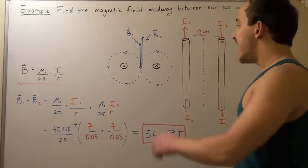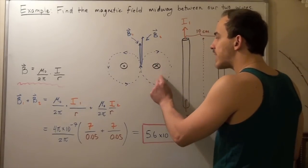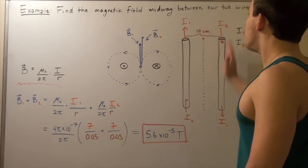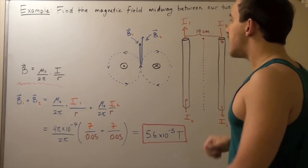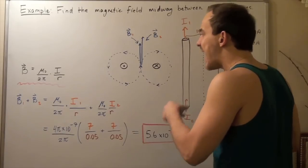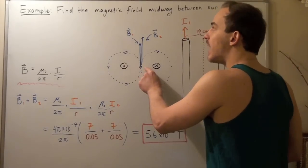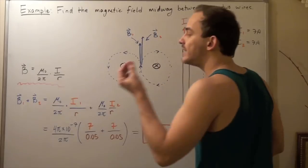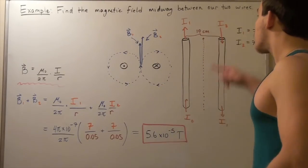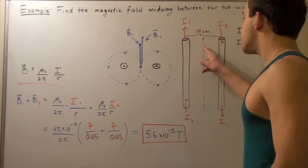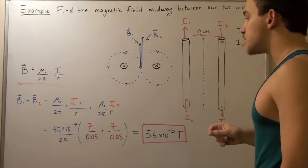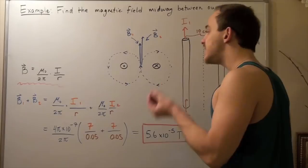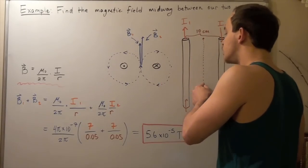Now notice the following. If we reverse this direction of our current, if this automatically now goes upward instead of downward, then this vector will point downward. And now if we try to find our net magnetic field, we have to subtract this guy and not add that guy. And that means since our current is the same and we have the same distance from each of the wires, these guys will cancel out and we will find a magnetic field of zero midway between our two wires.